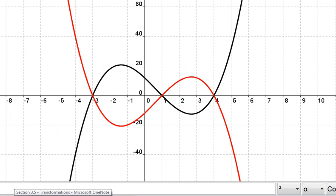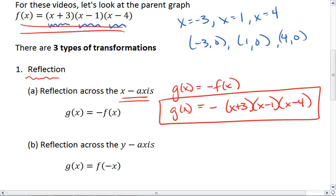Okay, we can also reflect across the y-axis. And the way we do that is to make all of our inputs negative. So we switched the sign on our inputs.